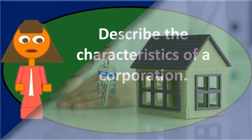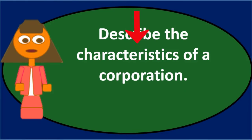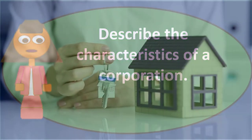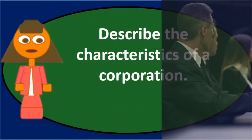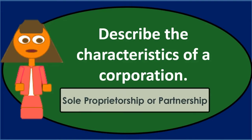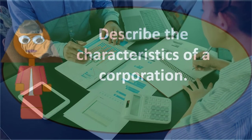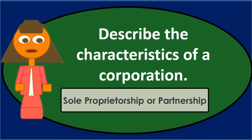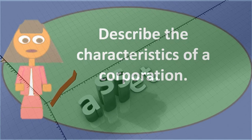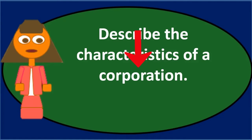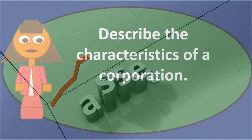The corporation has characteristics given to it by law almost as if it were a person. Those include the right to own property and the responsibility for liability related to that property. This is a huge benefit: if the corporation is thought of as a separate person and gets sued, the corporation is liable — but not necessarily the owners in the form of shareholders. This is different from a sole proprietorship or general partnership, where a lawsuit can go after personal assets like a home.